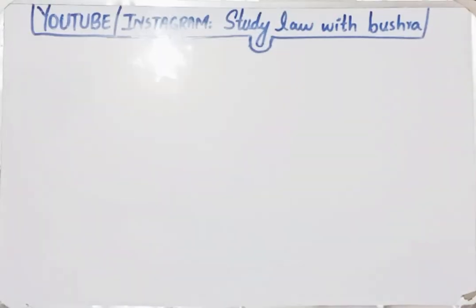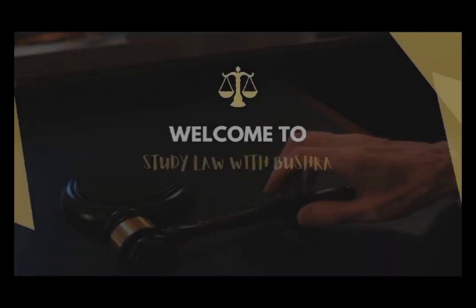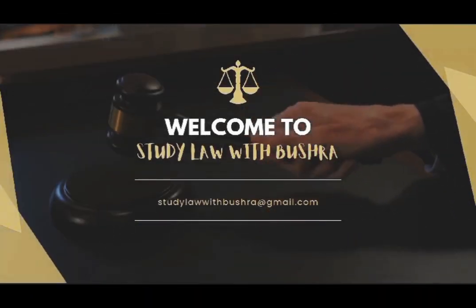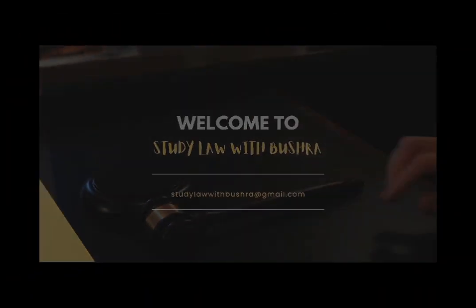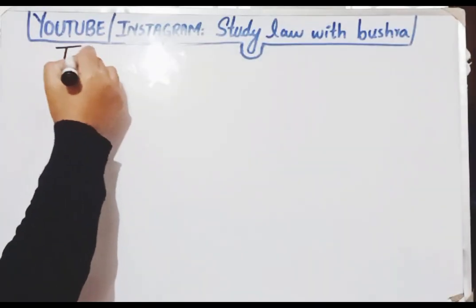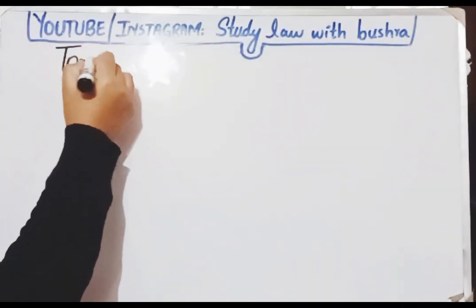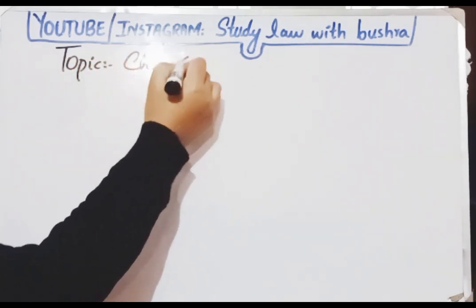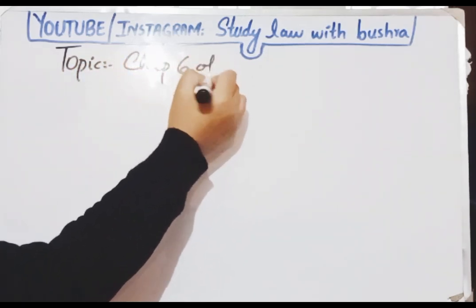Assalamu alaikum viewers and welcome back to my channel Study Law with Pushtra. We were discussing Punjab Tenancy Act 1887 and have discussed up till section 34. In this video we are going to discuss Chapter 6.